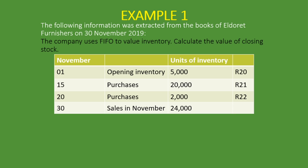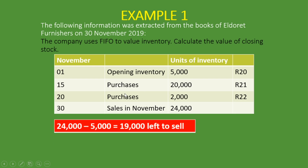Using FIFO, we know that if we sold 24,000 units, which ones did we sell first? We sold the first ones we had in stock — that's the name, first in first out. That was the 5,000 units. What we're trying to figure out is how much is left, because they asked us to calculate the value of closing stock. So: 24,000 minus 5,000 equals 19,000 still left to sell. The 5,000 is all gone.